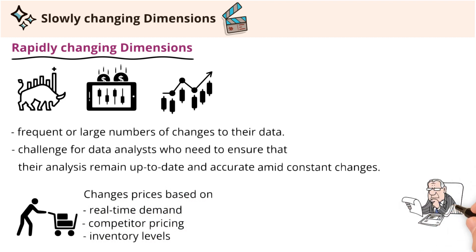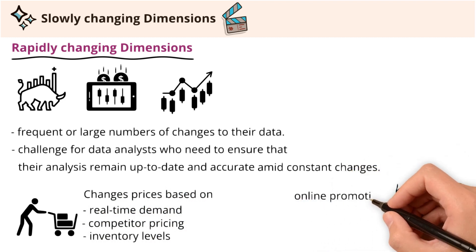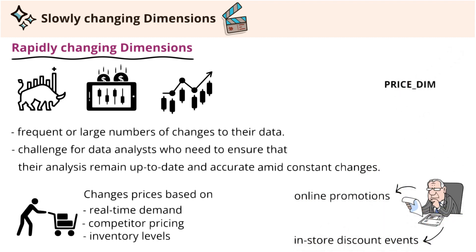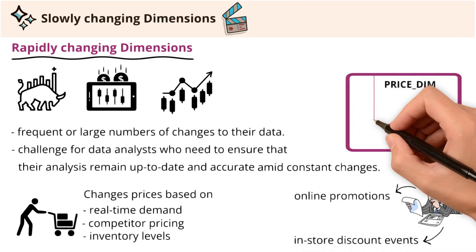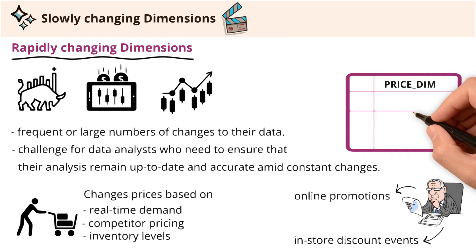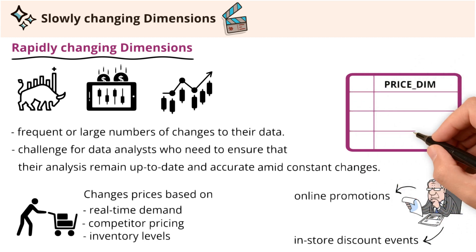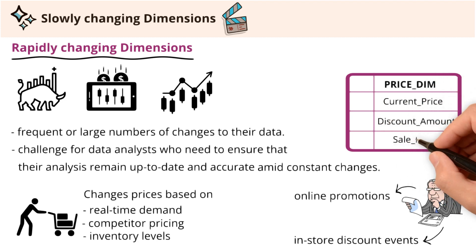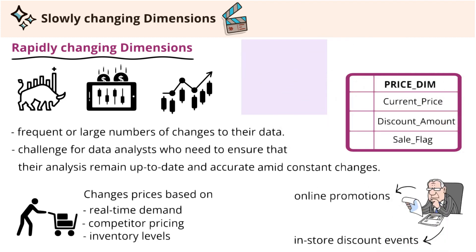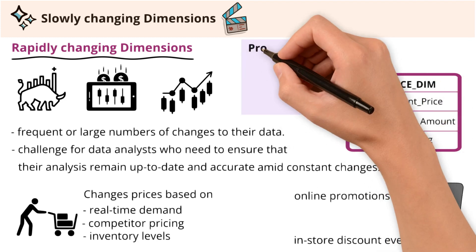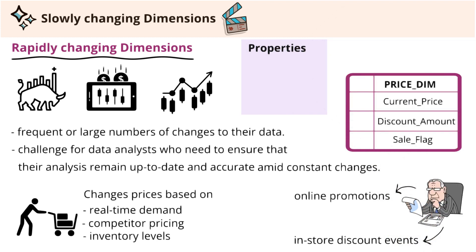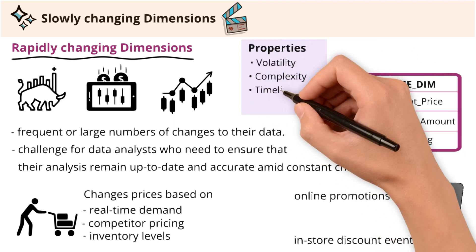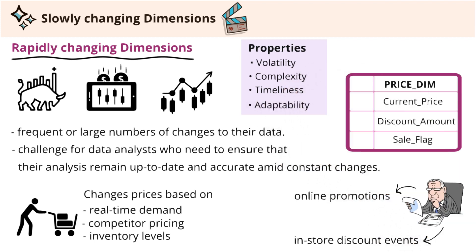Whether the analyst is evaluating online promotions or in-store discount events, the price dimension requires frequent updates to reflect the latest pricing data, which includes attributes like current price, discount amount, and sale flag. The critical properties of rapidly changing dimensions are: volatility, complexity, timeliness, and adaptability.